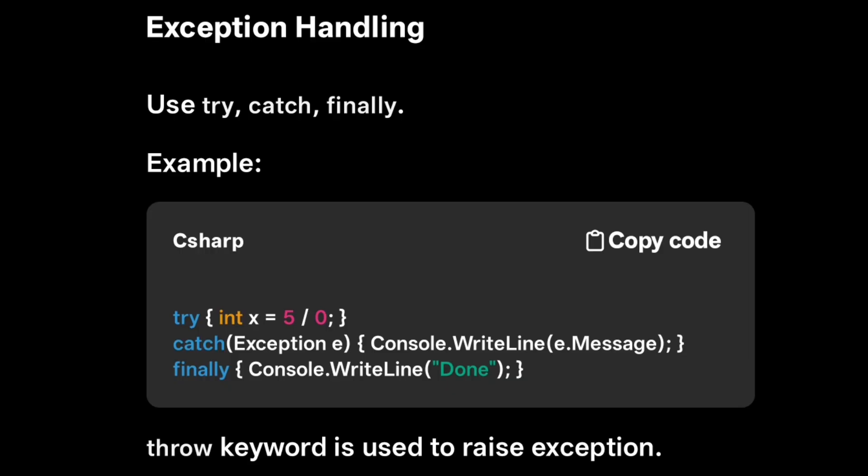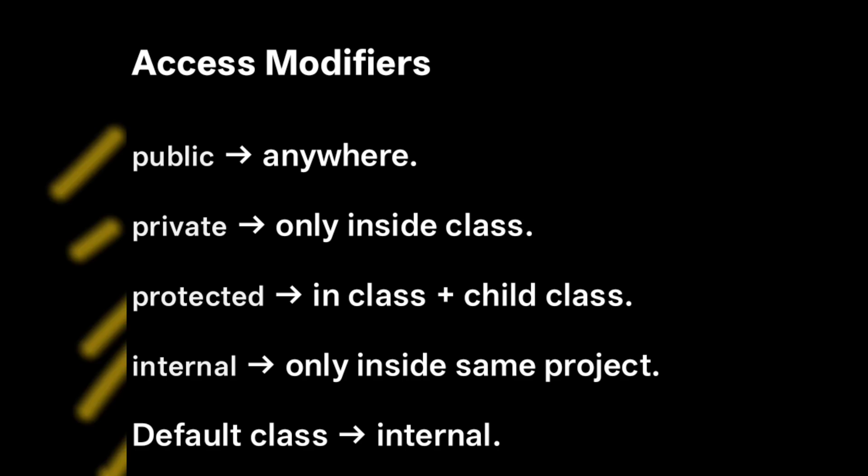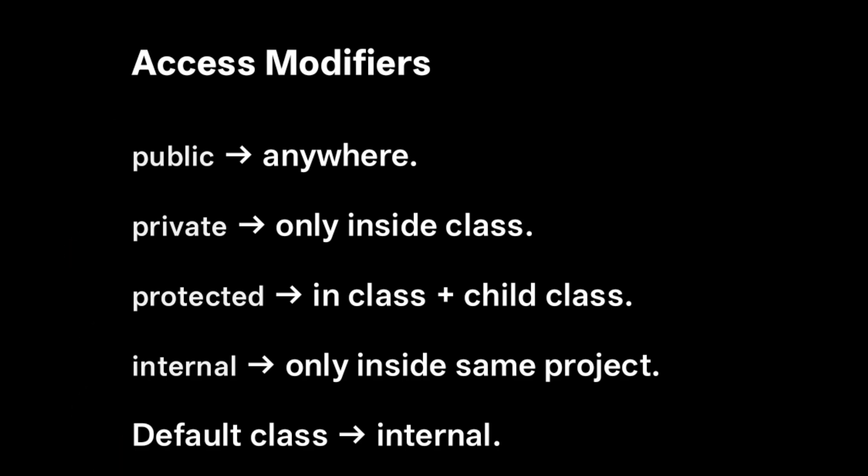For exception handling, use 'try', 'catch', and 'finally' keywords. The 'throw' keyword is used to raise exceptions. For access modifiers, C# has four: public (accessible anywhere), private (only within the class), protected (class plus child class), and internal (only inside the same project). The default class access modifier is 'internal' — this is commonly asked in MCQs.